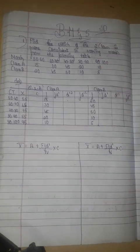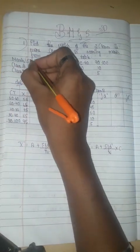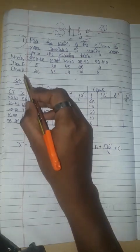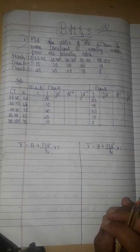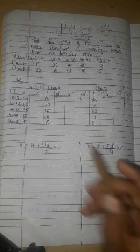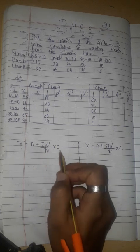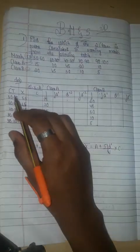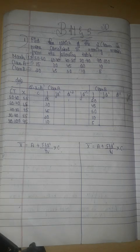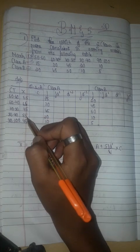We will set up the class intervals for Class A and Class B, along with the frequency of Class A and the frequency of Class B. We will also note the changes. The first formula is: mean = A plus sigma Fd' divided by N, into C. We will look at the first two tables of class intervals and find x.